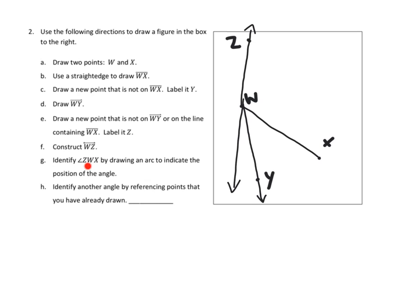Part G: identify the angle ZWX by drawing an arc to indicate the position of the angle. When identifying angles, the middle letter W is the vertex. Our three points are Z, W, and X, with W in the middle. So I'm switching to blue and drawing a little arc that shows the angle ZWX — the arc spans from Z to X with W at the vertex.